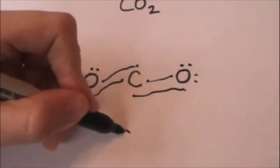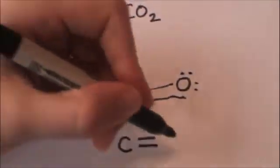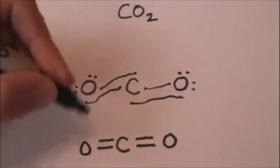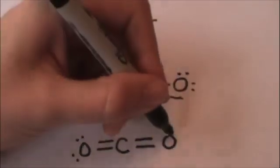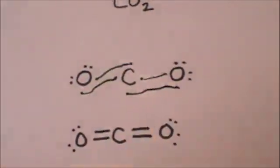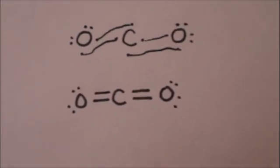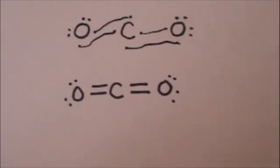so let's redraw this in a nice, pretty fashion. And we get the Lewis dot structure for CO2, carbon dioxide.